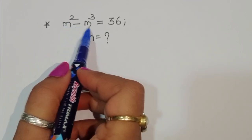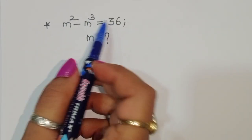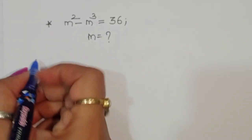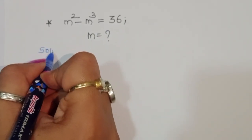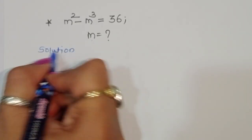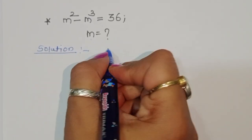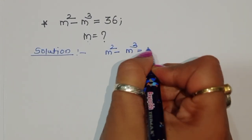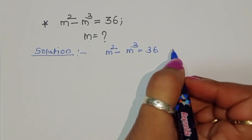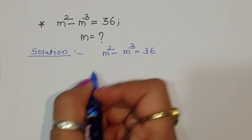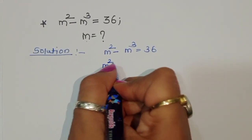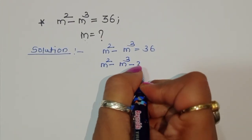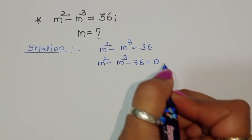We are given m squared minus m cubed is equal to 36, and we have to find out the value of m. Let's see the solution. We can write this as m squared minus m cubed minus 36 is equal to 0.